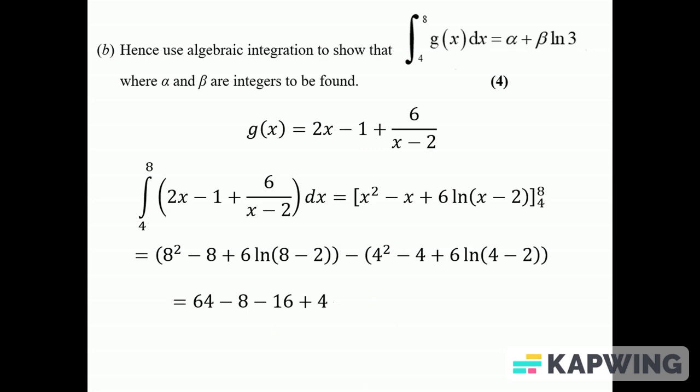Numbers, I'll separate that out because it wants it in the form α + β ln 3. So I need the numbers first. So I've got 64 and then -8 on the left hand side from the first bracket, and then I've got -16 + 4 from the second bracket. And then the ln's I can lump in one with a 6 ln(6/2), 8-2 over 4-2.